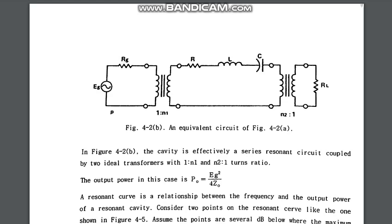This is the equivalent circuit of the cavity. In the input section there is a 1-to-N1 transformer, and the AC signal passes through the generating resistance of the generator. There is also an RLC section in the cavity region — that is the resonance section where we will find out the quality factor. And there is an N2-to-1 transformer on the output side.